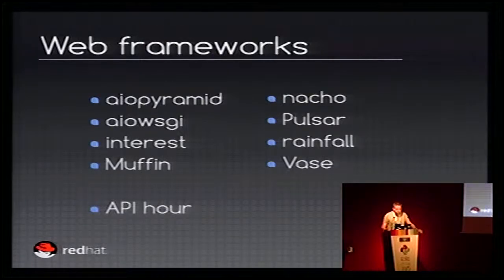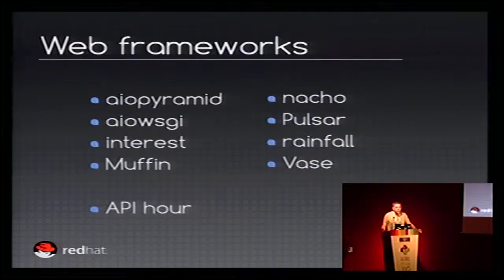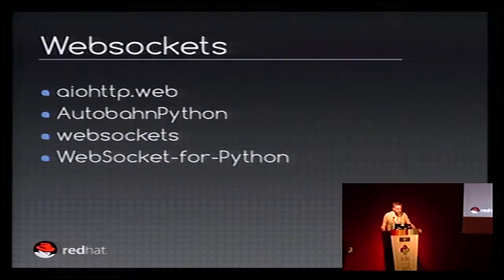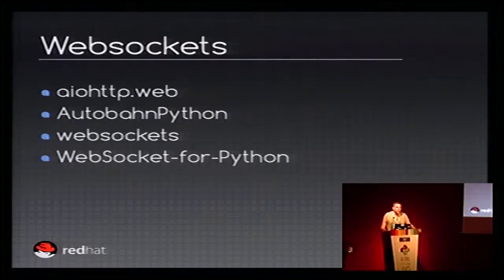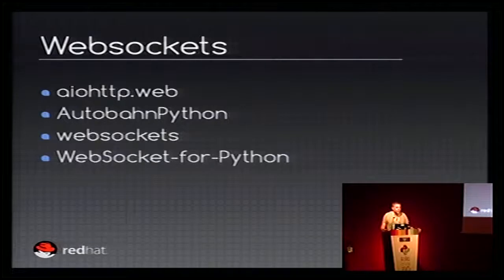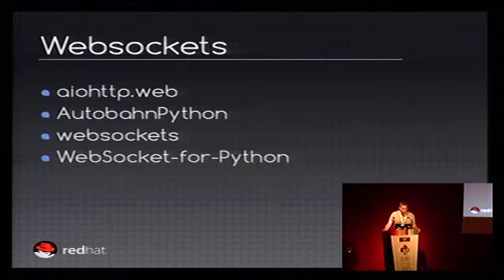For your information, Pulsar also works on Twisted, Tornado, and Trollius. So using Pulsar, you can write code working on different event loops. For WebSockets, you also have a choice between four libraries. aiohttp, as I said, has a module for WebSockets for client and server. You have Autobahn Python, which is also compatible with Twisted, Tornado, and Trollius — I will explain Trollius later. And you have also websockets, a WebSocket for Python library.